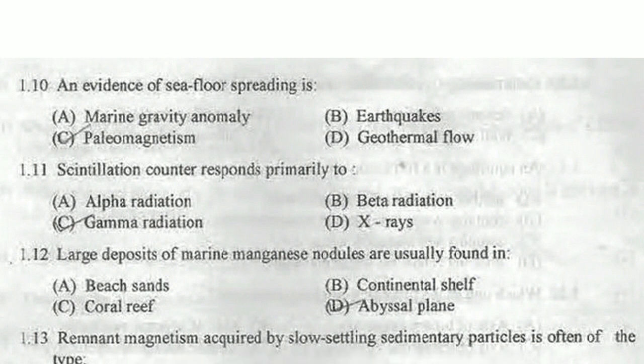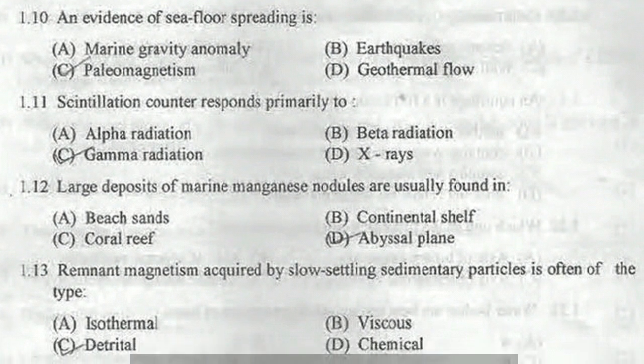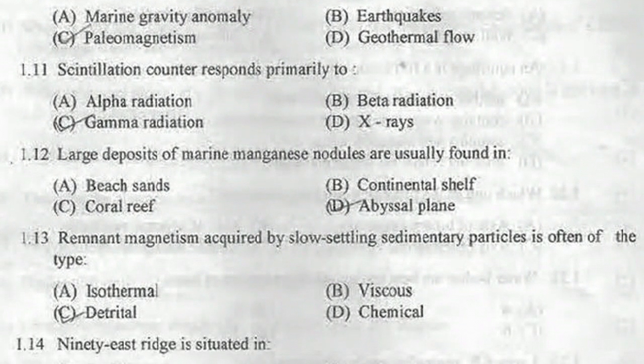The evidence for sea floor spreading: option A is marine gravity anomaly, option B is earthquakes, option C is paleomagnetism, option D is geothermal flow. Marine gravity anomaly is not directly associated with sea floor spreading evidence. The correct answer is paleomagnetism. Regarding the scintillation counter: it is an instrument which detects ionized particle energy. Gamma radiations have the highest energy, so the scintillation counter responds faster to gamma radiations.